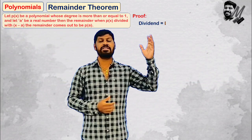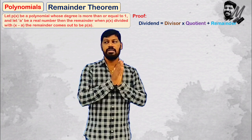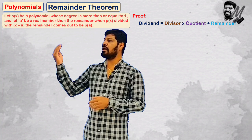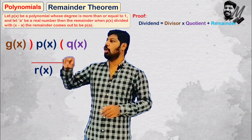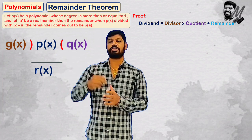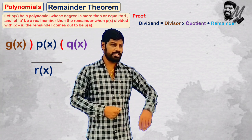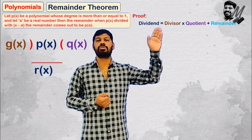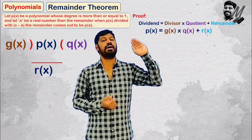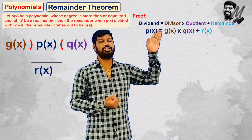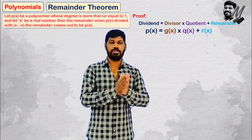Generally, we say dividend is equal to divisor into quotient plus remainder. We generally represent this as: P of x is equal to G of x into Q of x plus R of x.